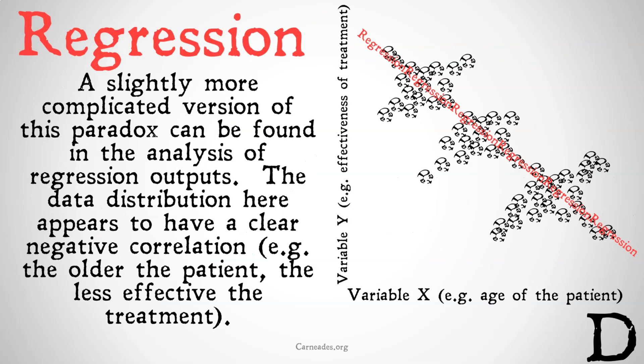A slightly more complicated version of this paradox can be found in the analysis of regression outputs. Basically, you're trying to draw a line that best fits the data sets. The data distributed here appears to have a clear negative correlation: variable x on the x-axis is the age of the patient, and variable y is the effectiveness of the treatment. There's a negative correlation between age and treatment effectiveness — we see that regression line going down.